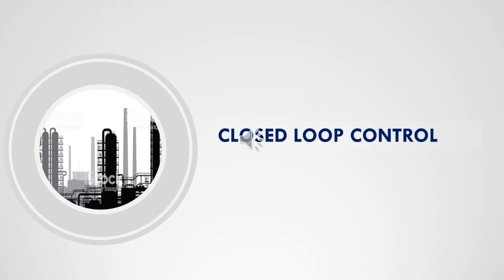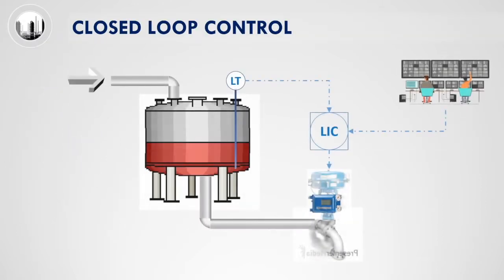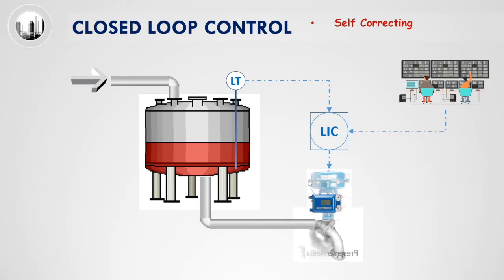Next, we will cover the topic of closed loop control. Closed loop control has a feedback loop and thus is self-correcting. Any variation in level will be fed back to the controller by the level transmitter. The controller will adjust the control valve opening accordingly.